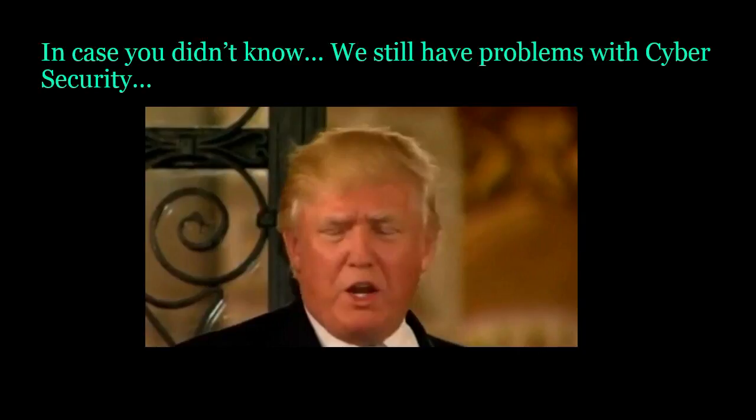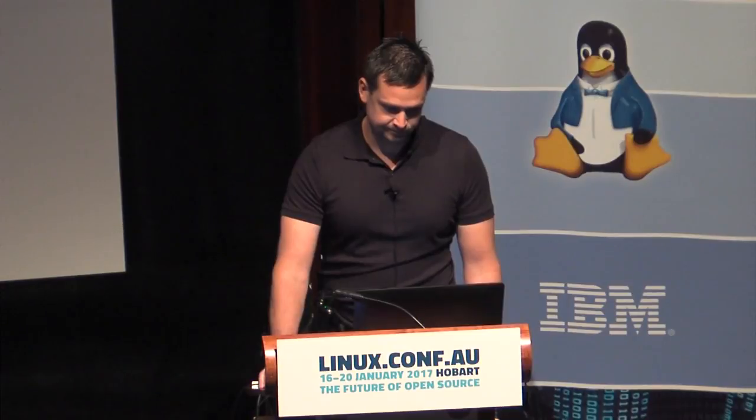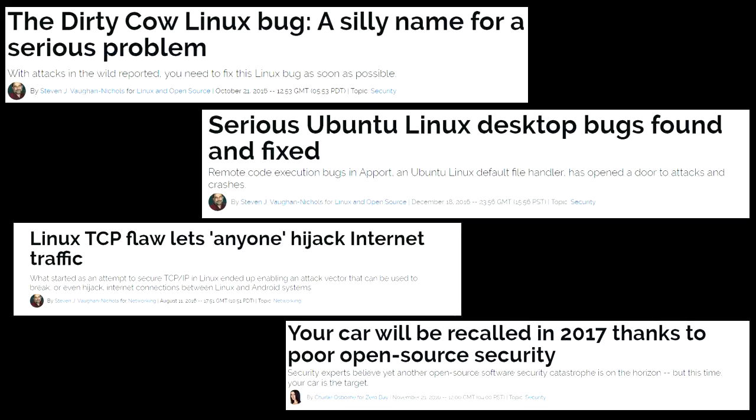In case you didn't know, we still have problems with cybersecurity. This is a chart from the Australian Department of Defense talking about things you can do to reduce susceptibility to cyber attacks — 35 reasons or so. What you won't find on this list is anything regarding improving the security of code that you develop. Unless you've completely outsourced everything to outside services, you might have stuff developed internally. You can only rely on outside mitigation factors to protect you to a certain extent — this is the traditional view of security.